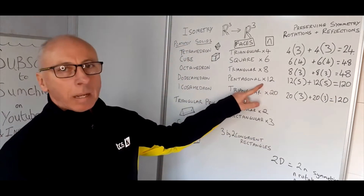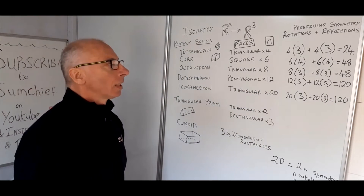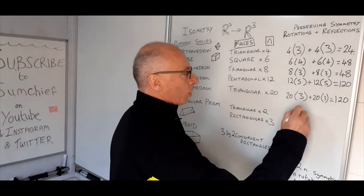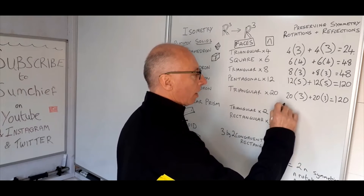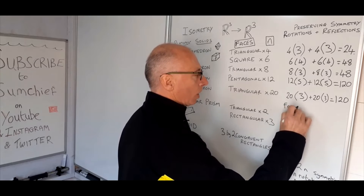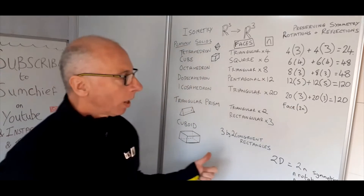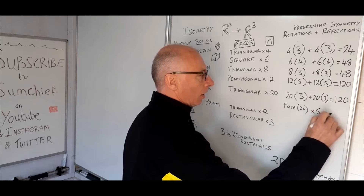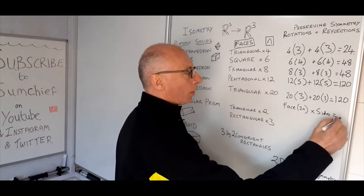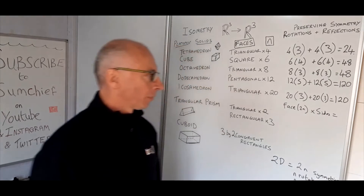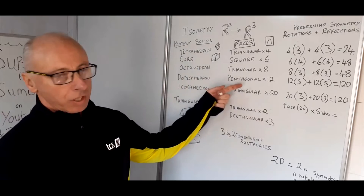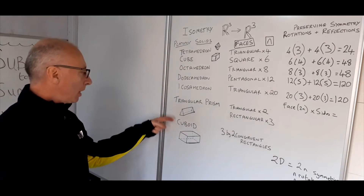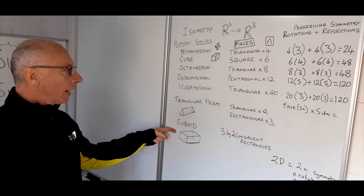Interestingly the icosahedron has the same count as the dodecahedron. The general formula is: take the number of symmetries of the face, which is 2n, then multiply by the number of faces — that gives the total number of preserving symmetries for these three-dimensional Platonic solids.